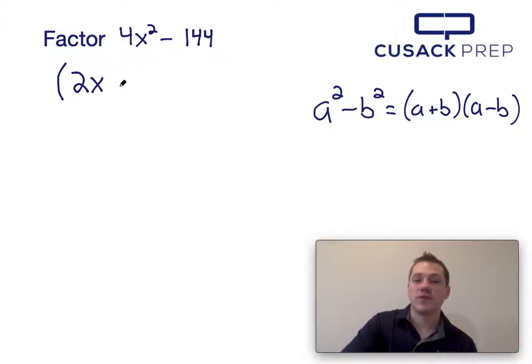and the square root of 144 would tell me what b is, which would be 12. So this can factor into 2x plus 12 times 2x minus 12.